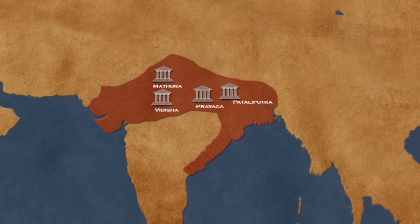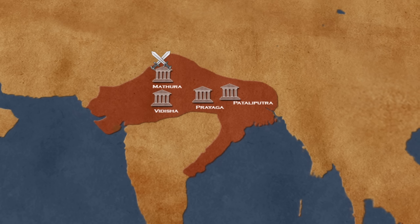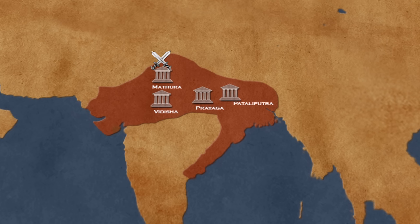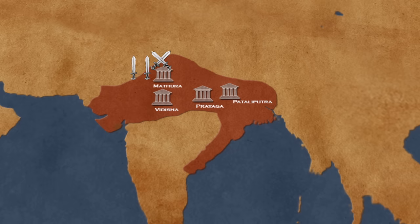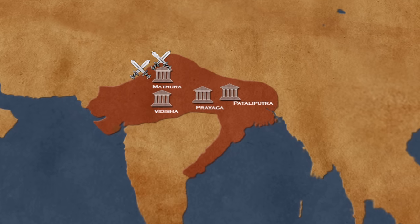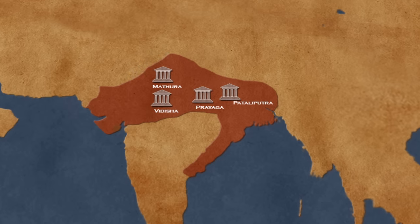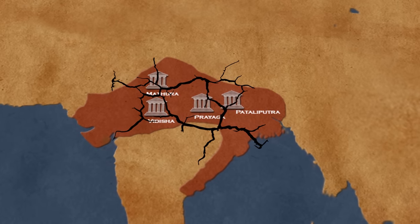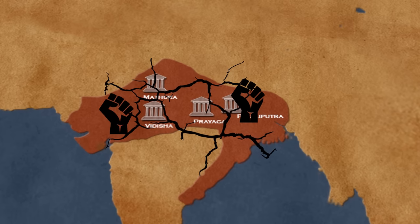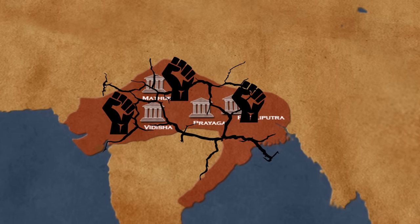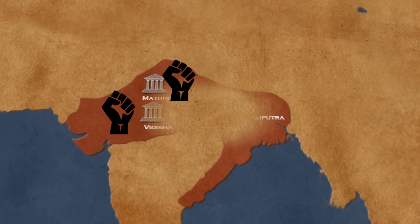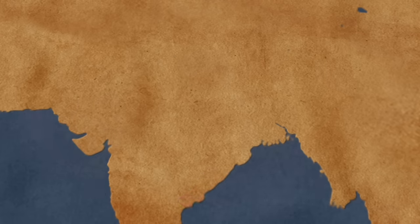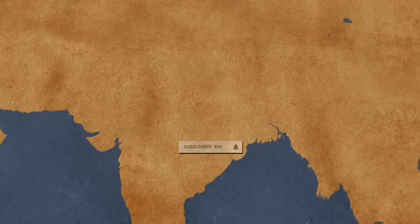Gupta kings fought against the Saka, Scythian rulers from the northwest of the Indian subcontinent, who were considered foreigners. The Gupta Empire also fought the Huns, who came from Central Asia at the end of the 5th century. The Gupta state was attacked by nomads more and more. The central administration collapsed over time and the empire became weaker; as a result, many local leaders declared their independence and separated from the Guptas. In the 7th century, the empire collapsed and the north of India was divided among many small kingdoms that fought each other.